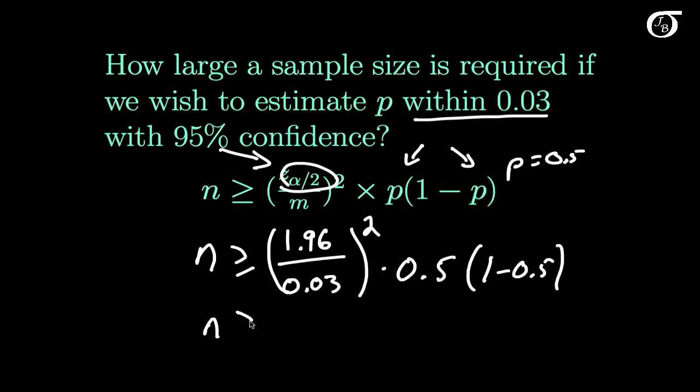And if you put all that in to your calculator or computer, you'd see that N is bigger than or equal to 1067.1. Now N has to be a whole number. It is a sample size. And so we round up to 1068.